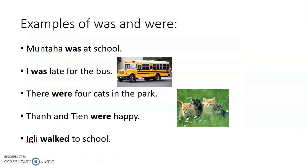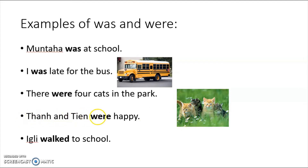Let's do some examples of 'was' and 'were.' Munta was at school. I was late for the bus. There were four cats in the park — four of them, so 'were.' Ton and Tin were happy because two of them were. Ugly walked to school — remember 'walked' uses -ed, that's past tense.